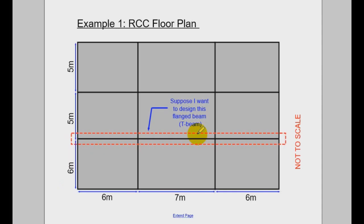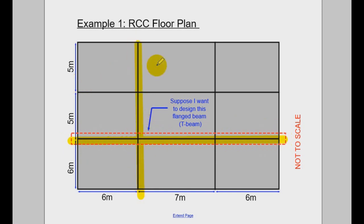Hi everyone, let's just have a quick example on how to find the breadth of a T-section. This is a T-section, as you know, and even this one, since it's an intermediate beam. So we're going to do one example on a T-section, and then we will move on to an L-beam.